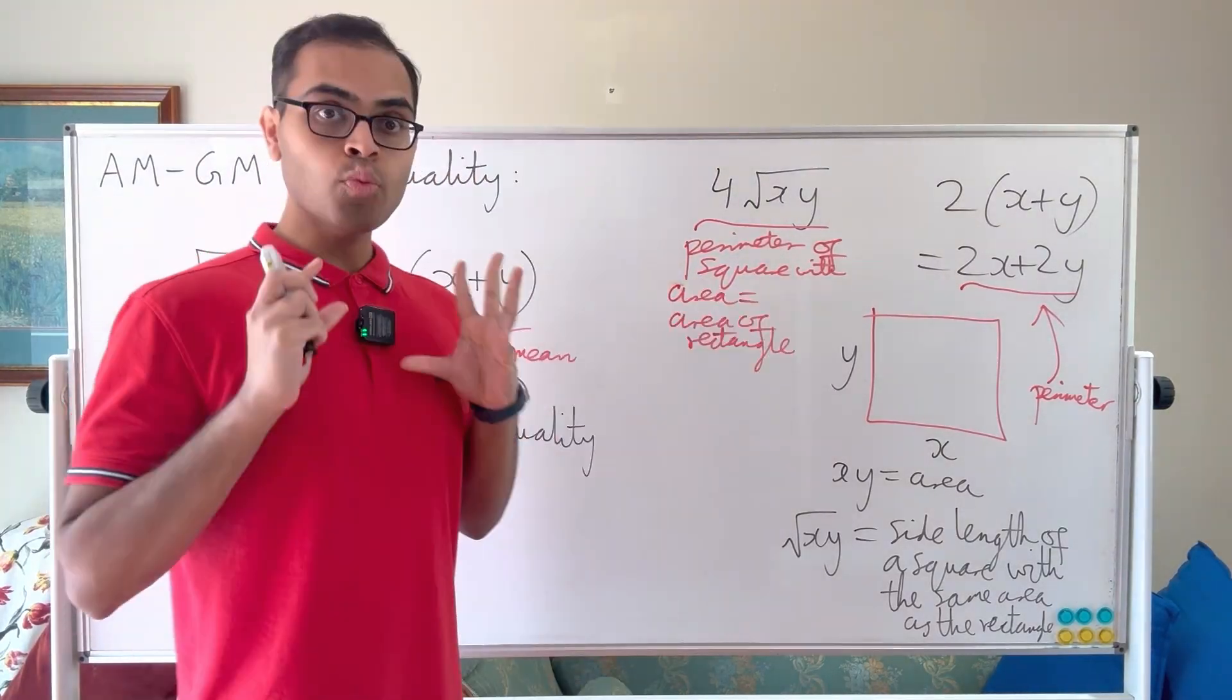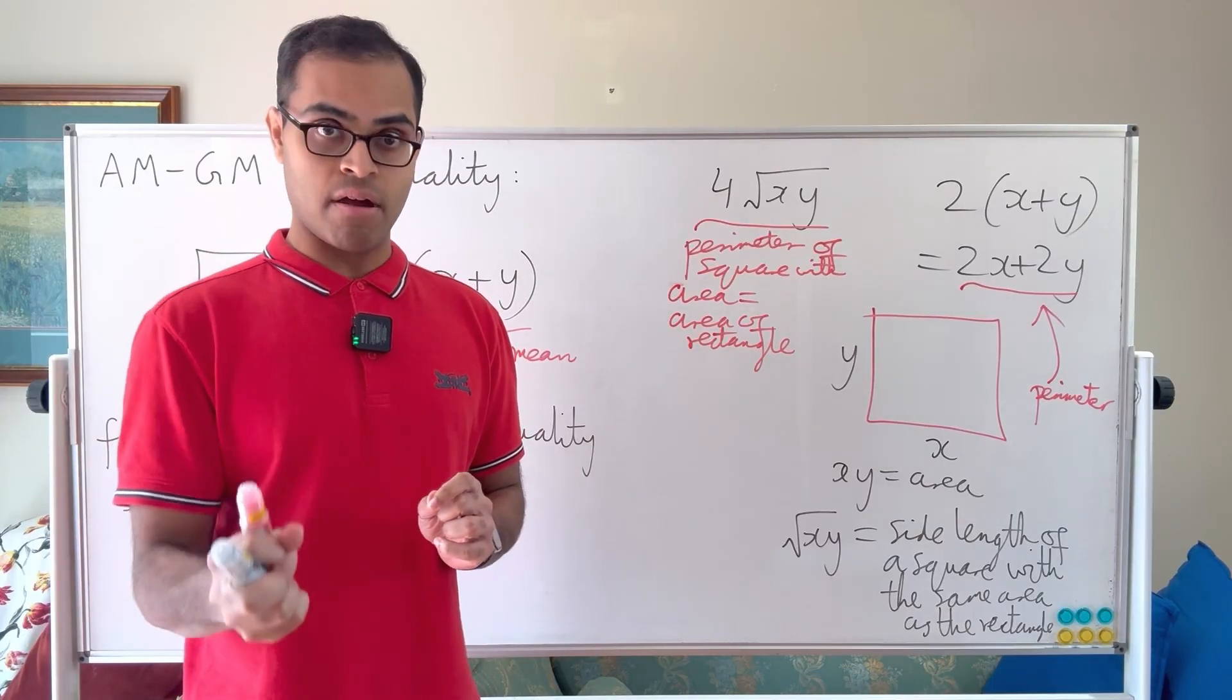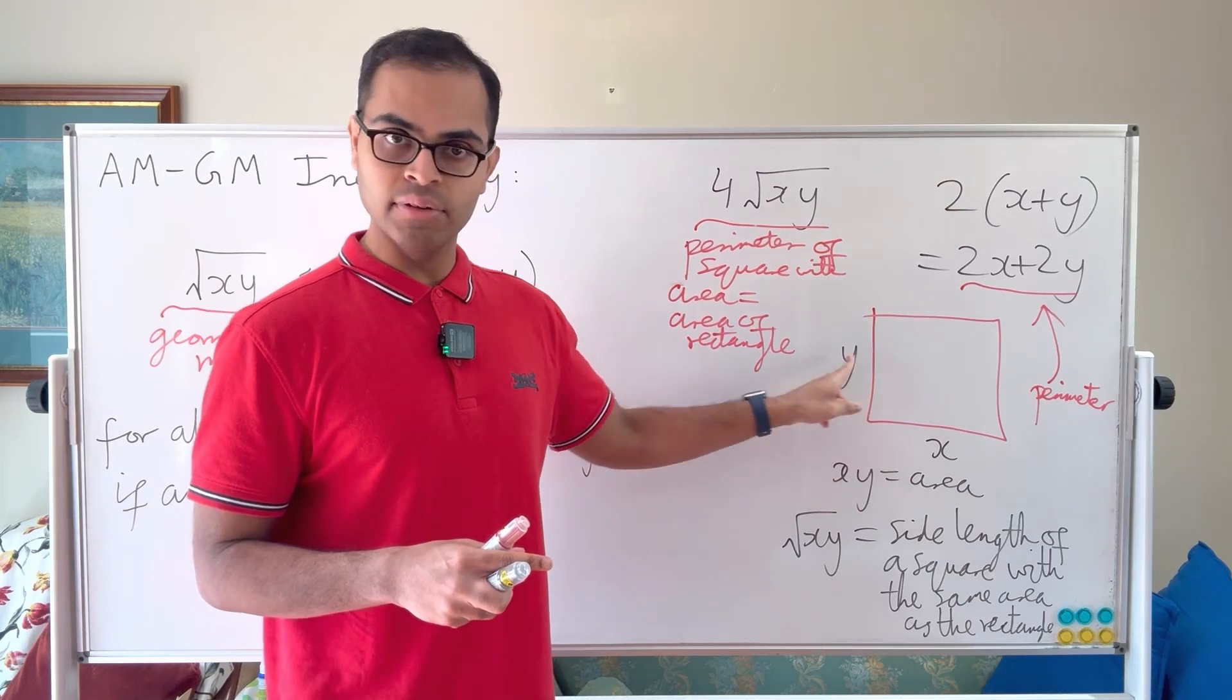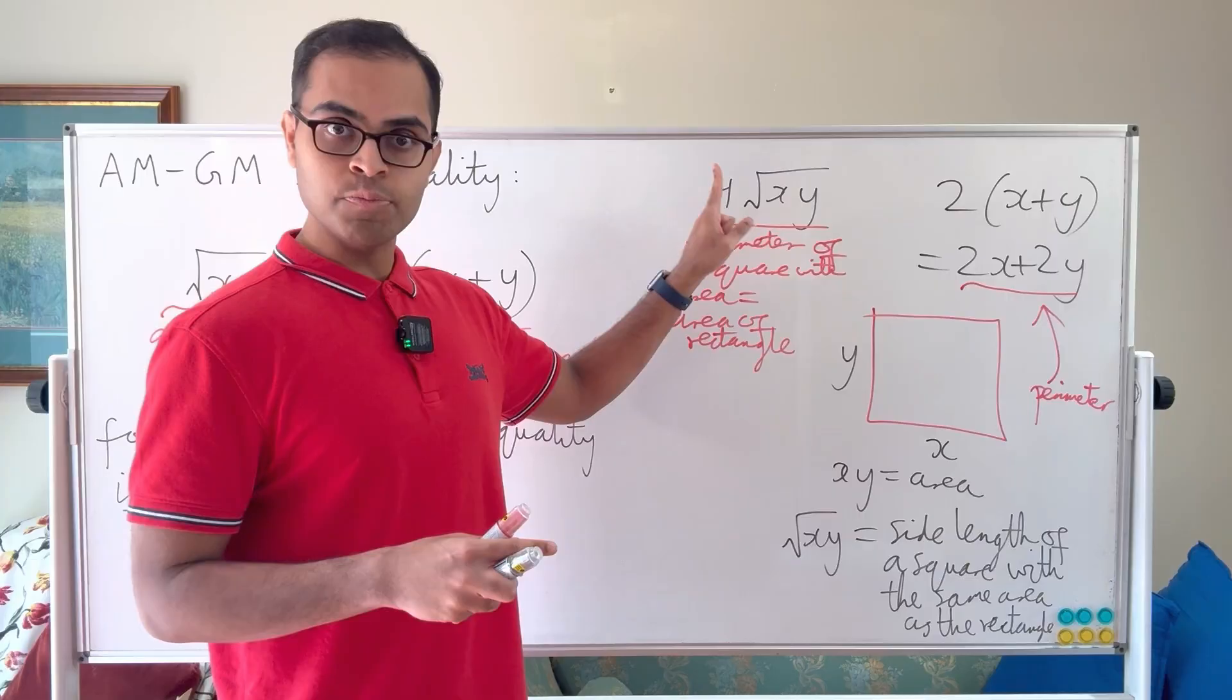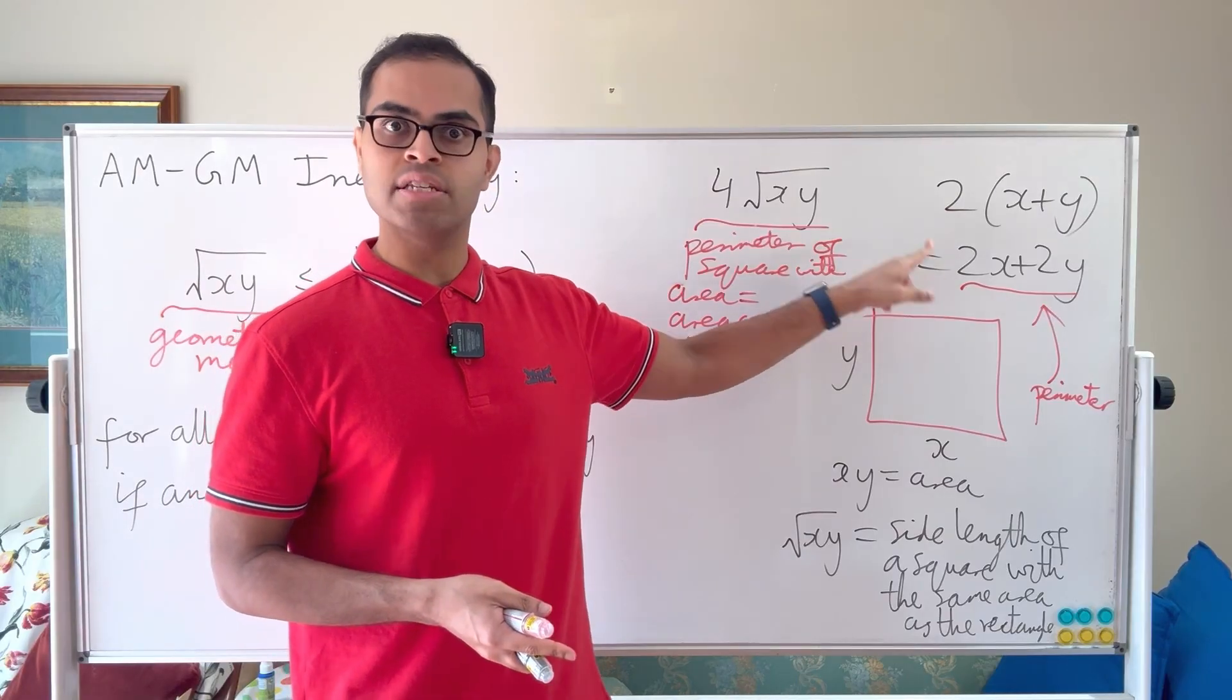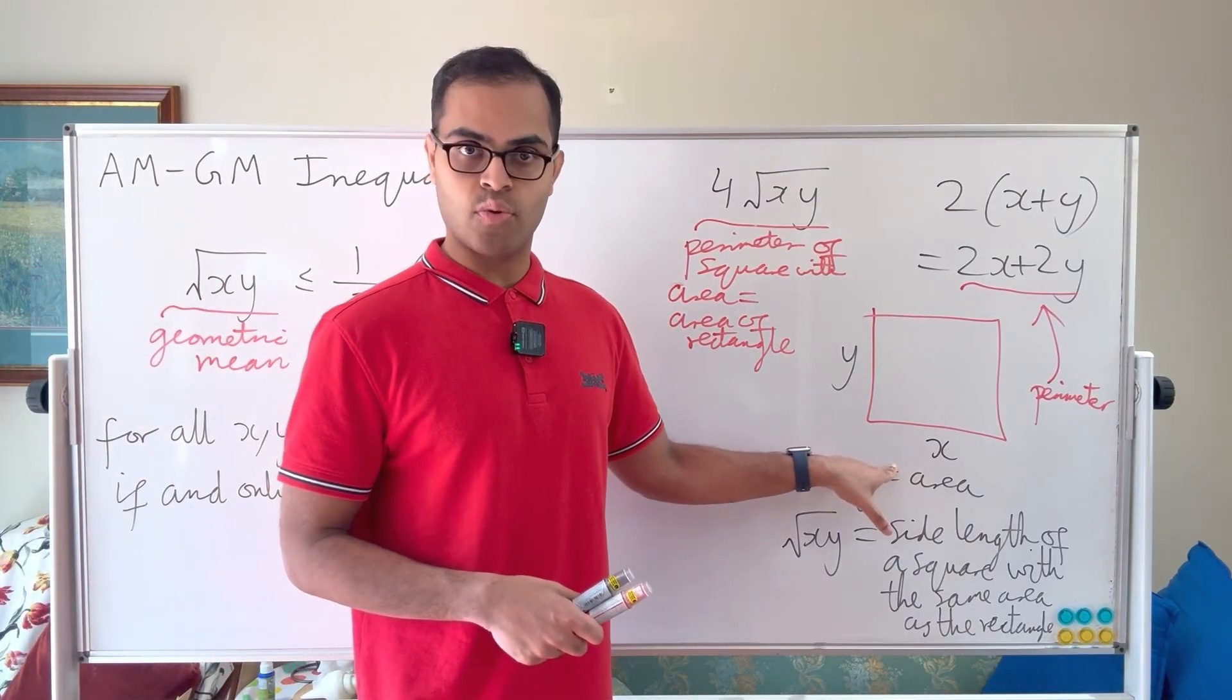This is the perimeter of that square with area equal to the area of the rectangle. So what that says is among all rectangles with a fixed area, the square is the one that minimizes the perimeter. This is very beautiful—when you take the square with area equal to the area of the rectangle with side lengths x and y, its perimeter will be less than or equal to the parameter of the rectangle. Equality holds precisely when x equals y, in other words when the rectangle is actually a square.